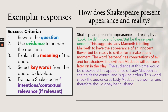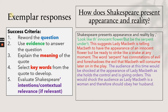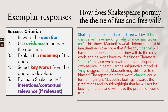'How does Shakespeare present appearance and reality?' Shakespeare presents appearance and reality by: 'Look like the innocent flower, but be the serpent under it.' This suggests Lady Macbeth is telling Macbeth to have the appearance of innocence but be ready to strike like a snake. The word 'serpent' has connotations of evil and foreshadows the evil that Macbeth will consume later in the play. The audience at this time would be shocked by Lady Macbeth holding control and giving orders, as she is a woman and therefore would have been expected to obey her husband.